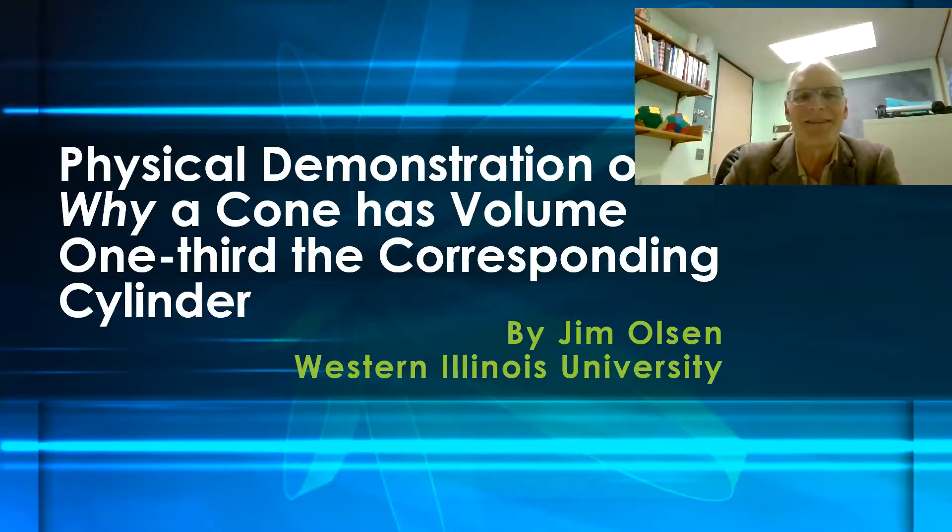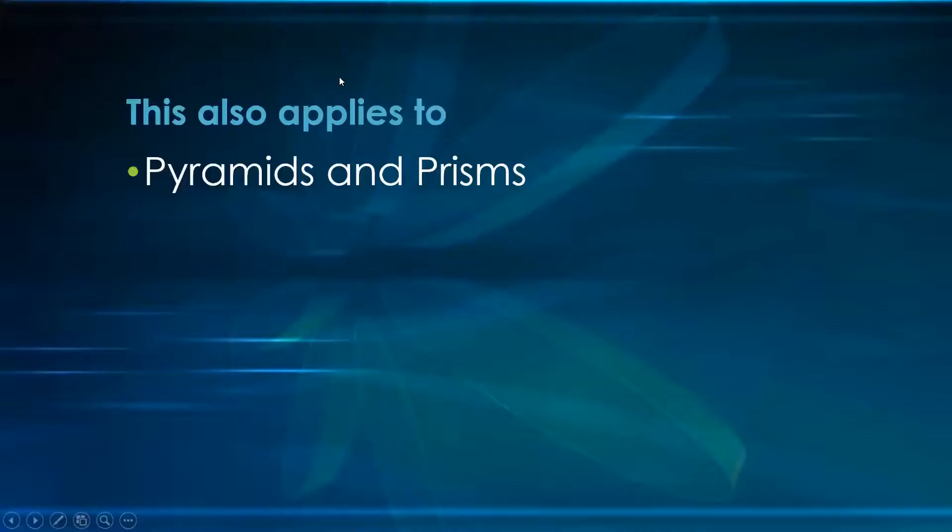Hello. This is a physical demonstration of why a cone has a volume that is one-third the corresponding cylinder. This also applies to pyramids and prisms.